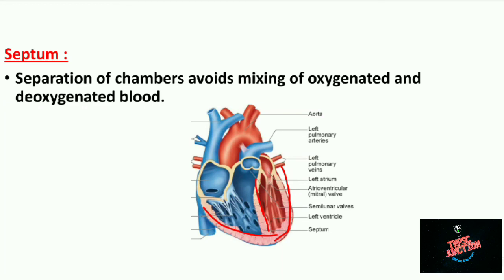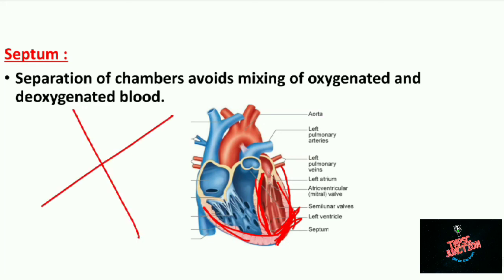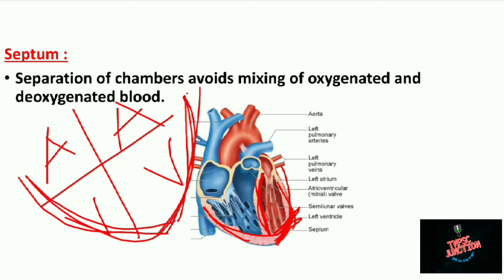The overall function: the septum divides the heart so that oxygenated and deoxygenated blood do not mix — there are two separate sides. The ventricle walls are thick because they need to pump blood with greater force. Comparing left ventricle and right ventricle: both have thick walls as a protection layer, which is why the ventricle walls are thicker than the atrium walls.